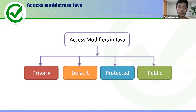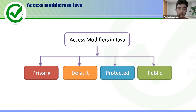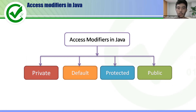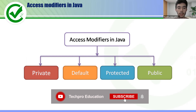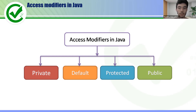The default access modifier means you cannot access the class, variable, or method from outside the package — it can only work inside the package. To make something default, you don't need to write anything; if you don't specify any access modifier, it will be default.